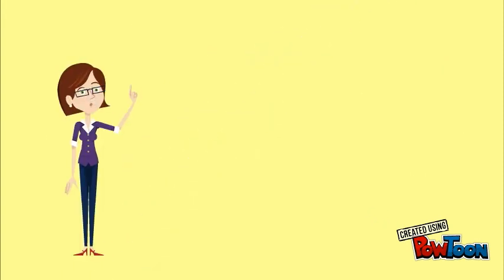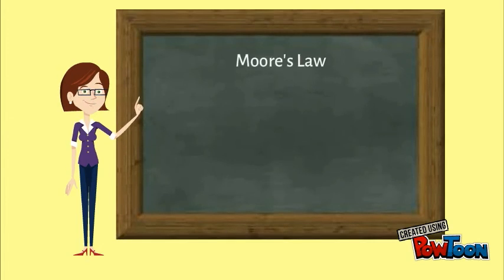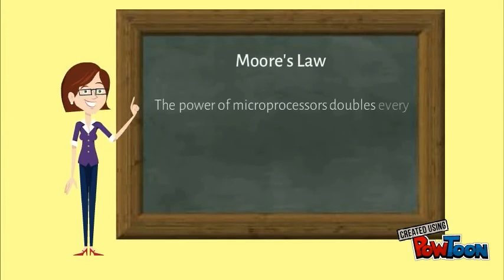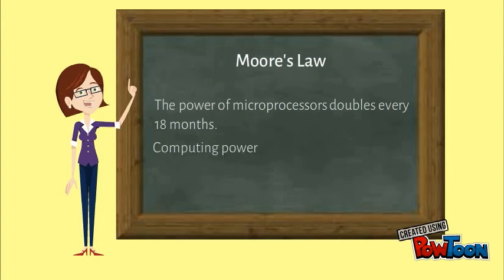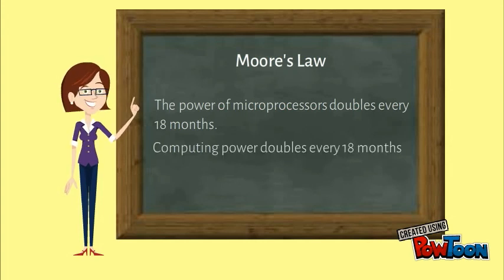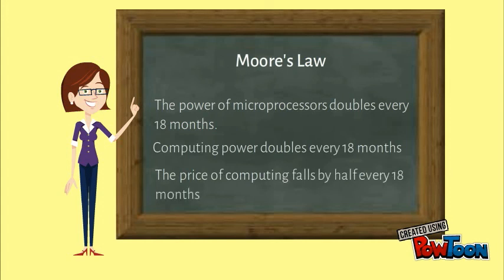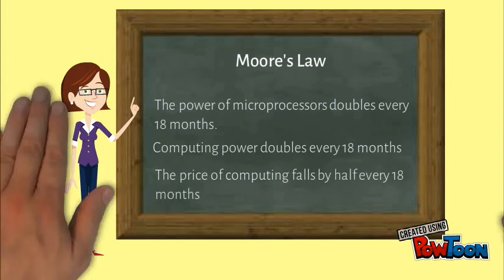Moore's law states that the power of microprocessors doubles every 18 months. Computing power doubles every 18 months, and the price of computing falls by half every 18 months.